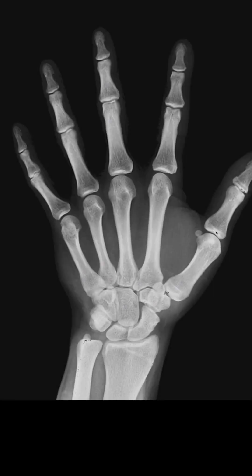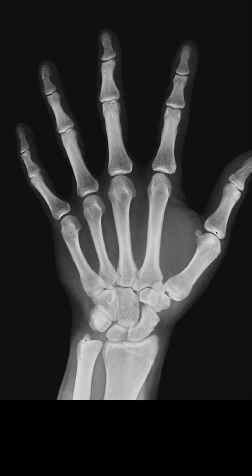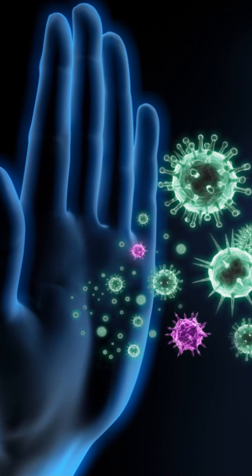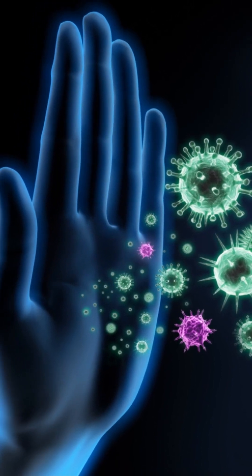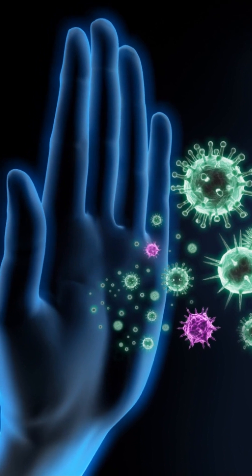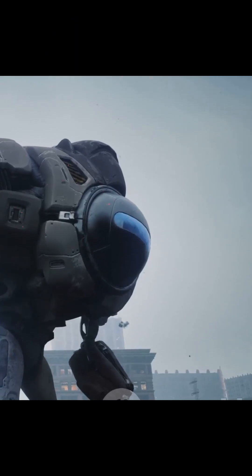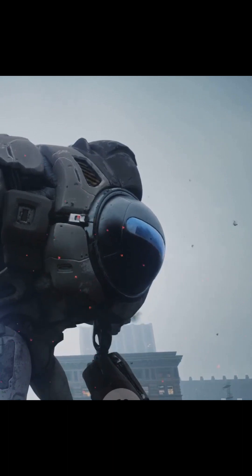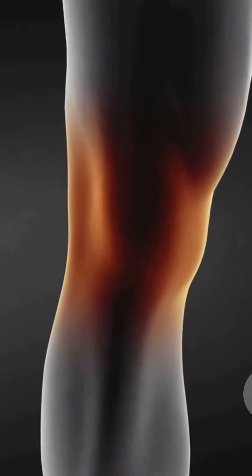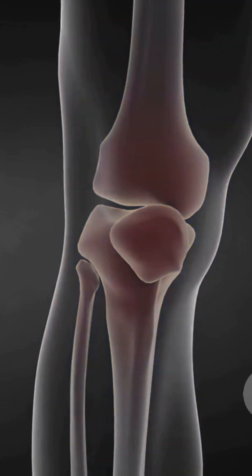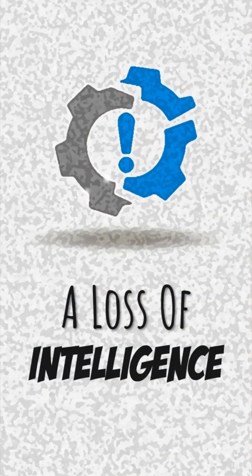Consider a third example: autoimmune disorders such as rheumatoid arthritis. Our body has an immune system to fight against invading microorganisms. But what happens in autoimmune disorders is that our immune system loses discrimination and starts attacking our own cells. In the case of rheumatoid arthritis, they attack the bone tissue at the joints. We have now looked at three examples, and these three are very different kinds of diseases, yet there is something fundamentally the same in all of them.